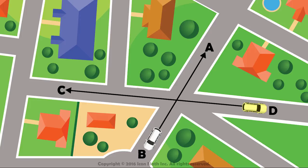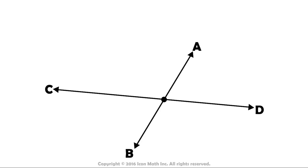We call this pair of lines intersecting lines. As you can see, the intersecting lines form an angle.